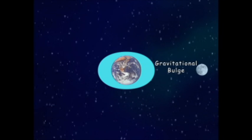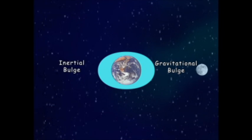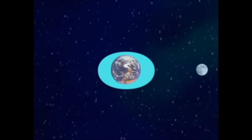There are two tidal bulges 180 degrees away from each other — the gravitational bulge on the side of the Moon, and the inertial bulge on the opposite side. Earth rotates underneath its own hydrosphere, in and out of low and high tide.